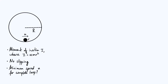Hi everyone. In my last video I found an expression for the minimum speed required for a particle to perform a complete loop around a circular track. This video is an extension of that, but this time instead of a particle we are going to consider a rolling rigid body with some finite size, and the radius of our rigid body is going to be r — the lowercase r I've drawn on the diagram.